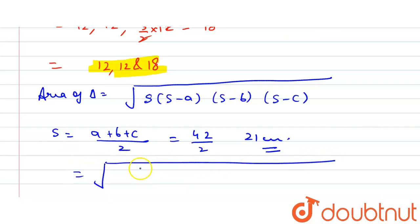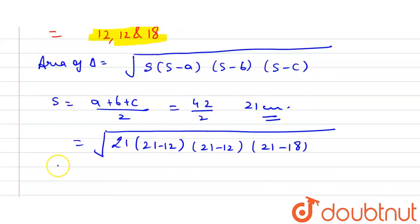You will get area of triangle: S is 21, next is 21 minus 12, next is 21 minus 12, and next is 21 minus 18. Now you will get 21, 21 minus 12 is 9, multiply 9, multiply 3.